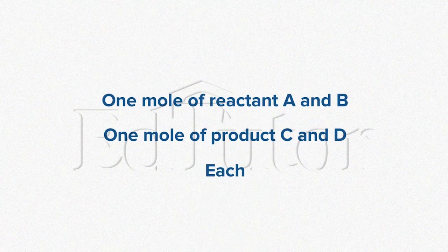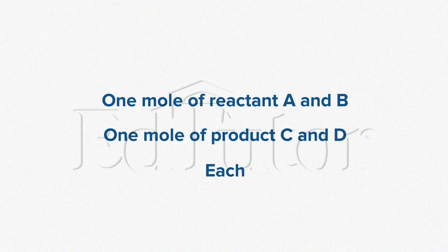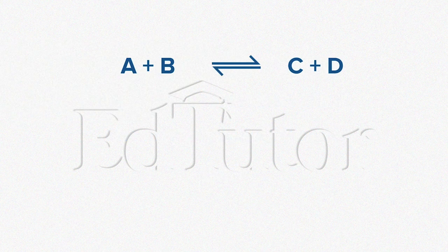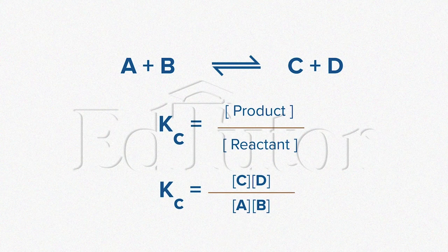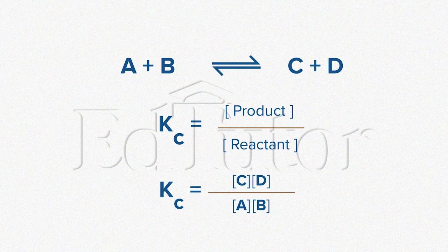In this equation, only one mole of the reactants and the products is present. We can now say that KC represents the ratio of concentrations between products and reactants.